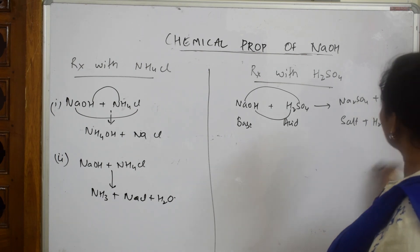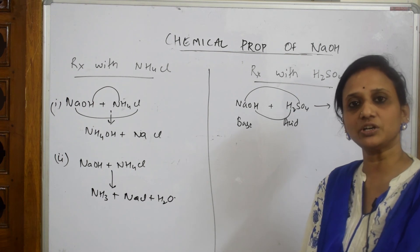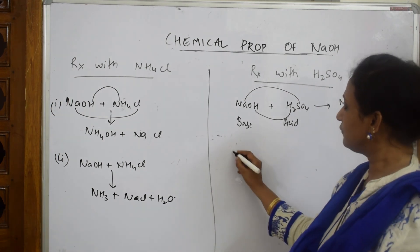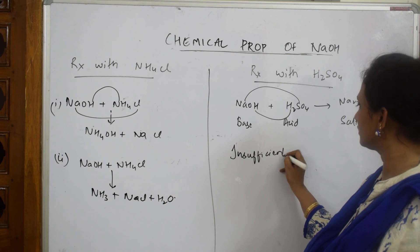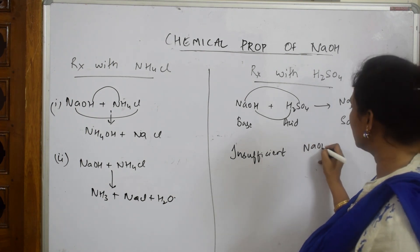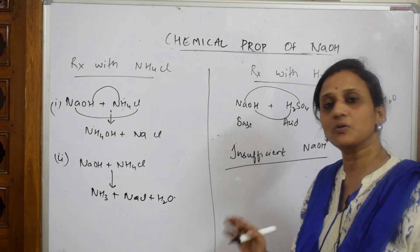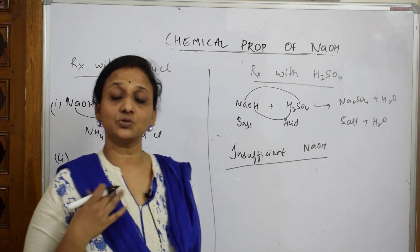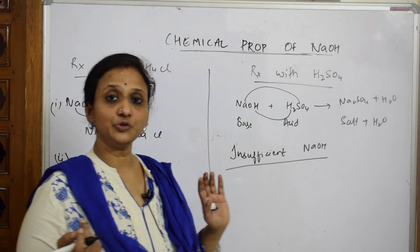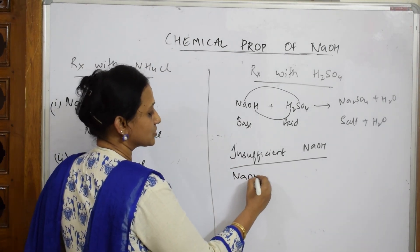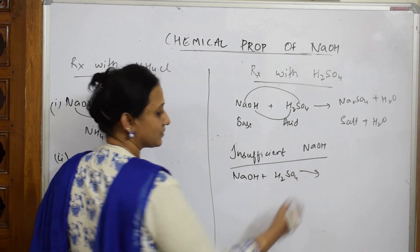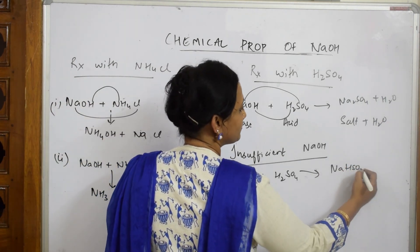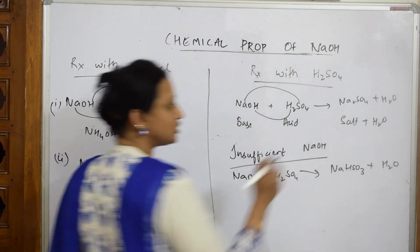When sufficient quantities of both base and acid are combined, they form salt plus water. However, if an insufficient amount of sodium hydroxide (caustic soda) is given to sulfuric acid, it does not form sodium sulfate directly. Instead, it forms sodium bisulfate (NaHSO₄) along with water. In the exam, if insufficient NaOH is specified, you need to predict sodium bisulfate as the product — be careful about this.